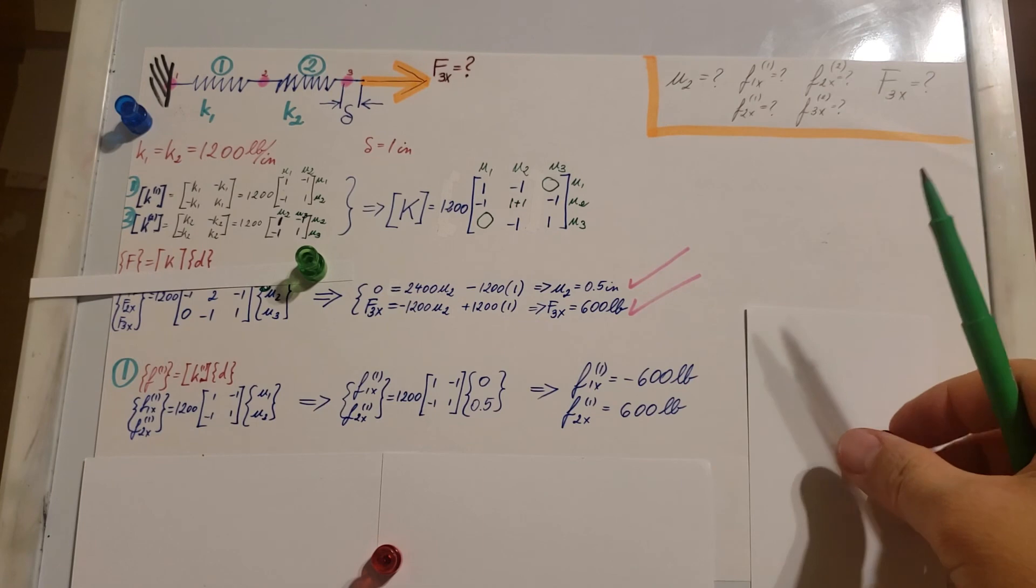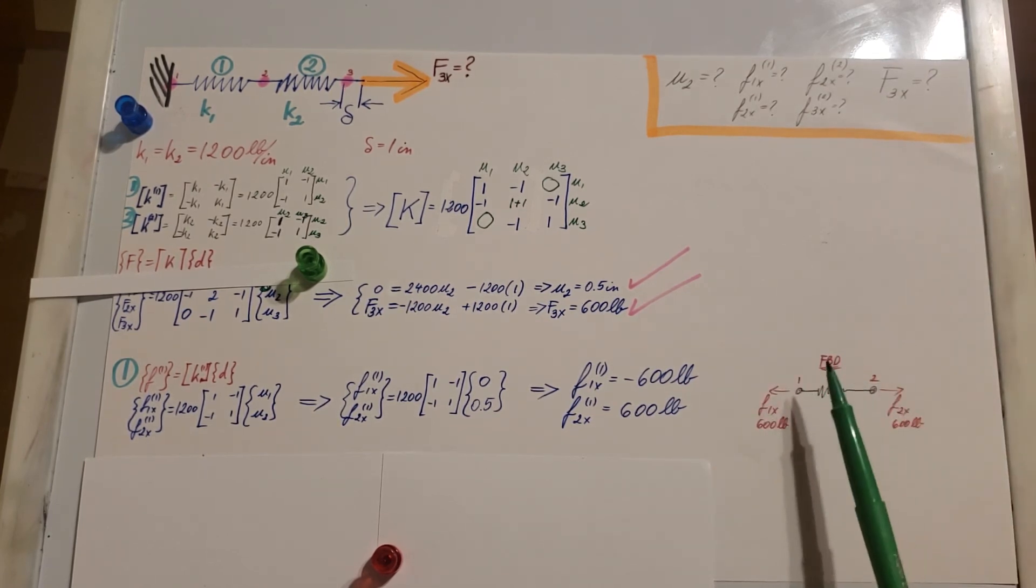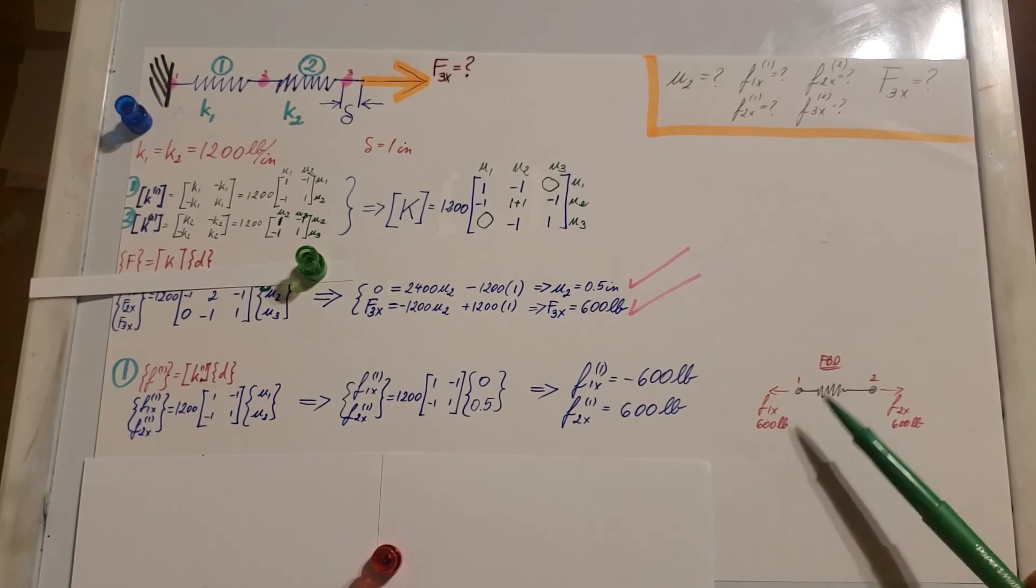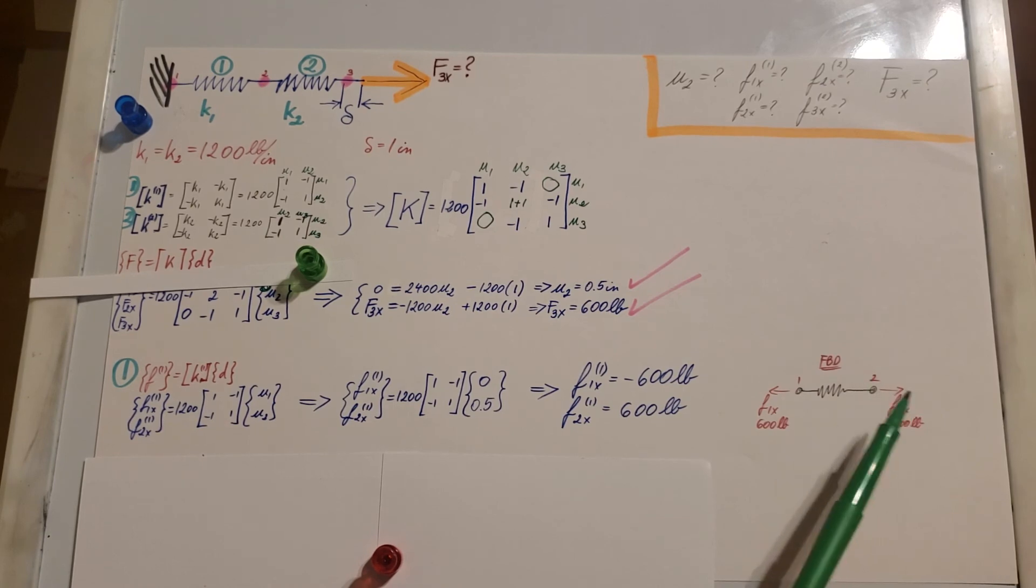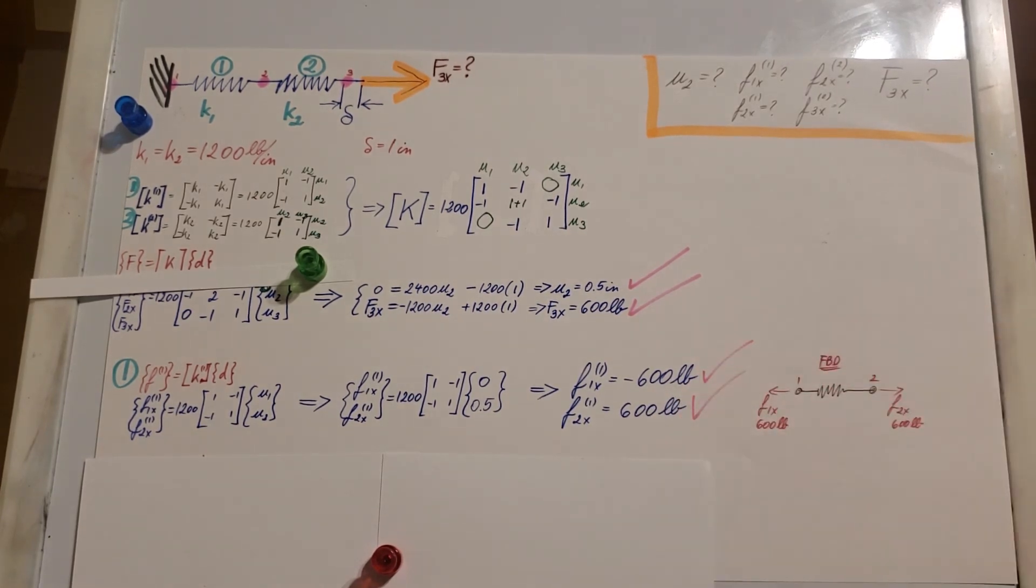Also, if you want to do a little check on your work, you can draw a free body diagram for this one element, and you can see that your F1x has a magnitude and direction in this way, 600 pounds, F2x on this side is positive, going this way, 600 pounds. Therefore, it's in equilibrium. We found the forces on element 1.